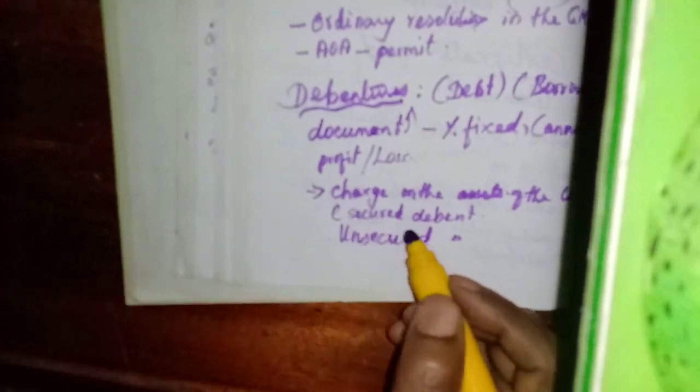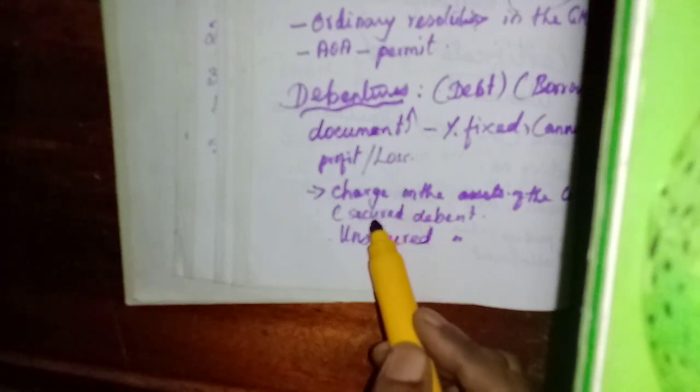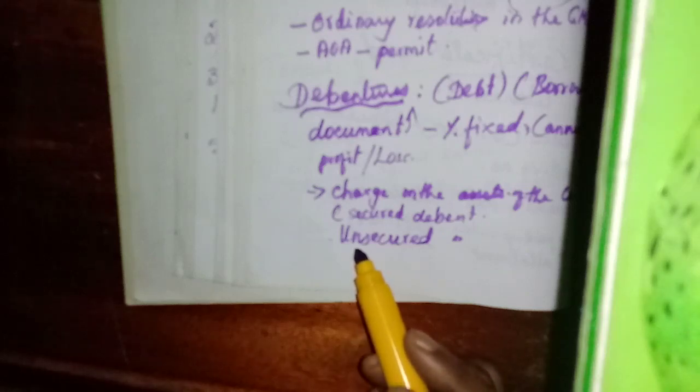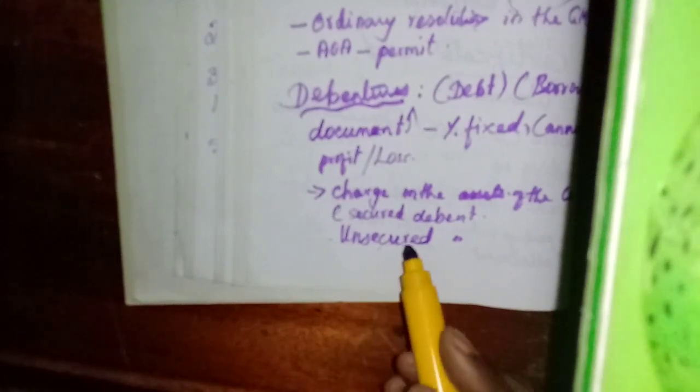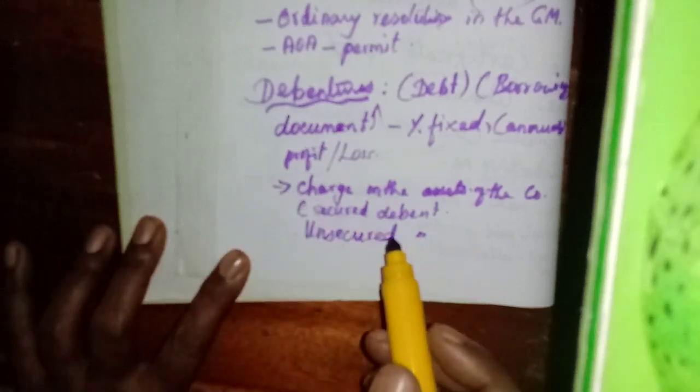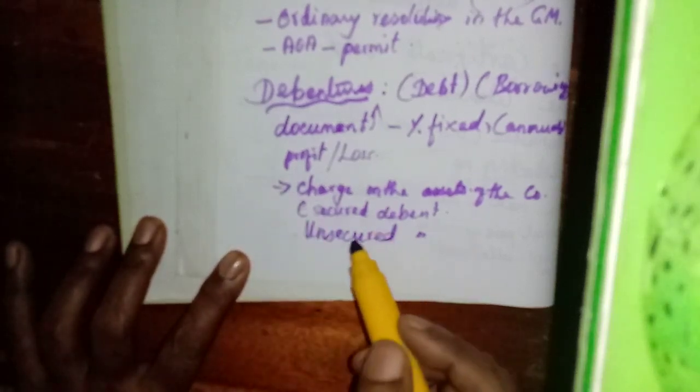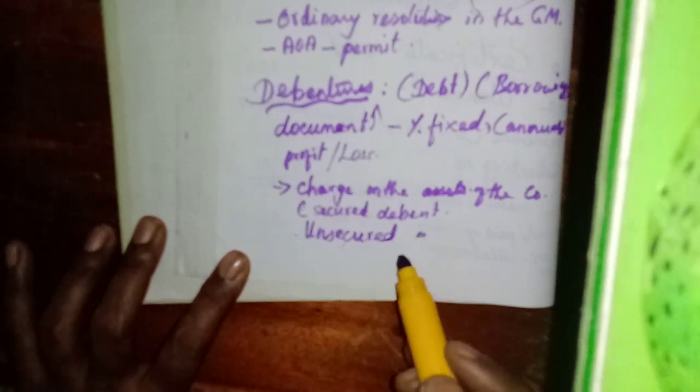The difference between secured and unsecured debentures: secured debentures have a charge against the assets of the company. If the company fails to pay, the debenture holders have the right to take over the charge on that asset, sell it, and recover the amount they paid to the company. But unsecured debenture holders do not have any right over the assets of the company — they have no security.